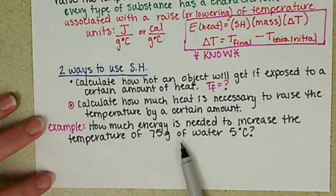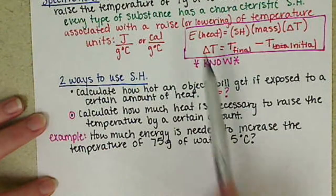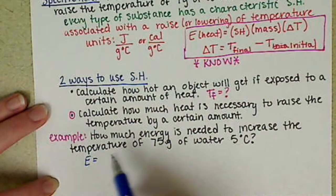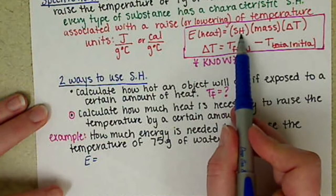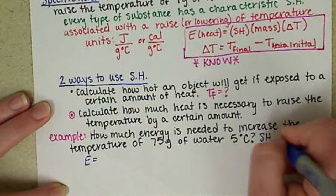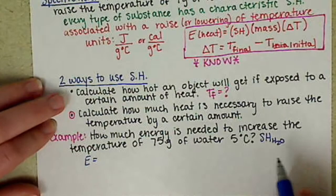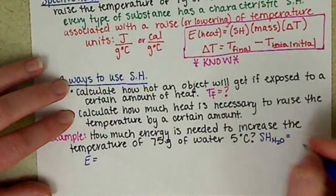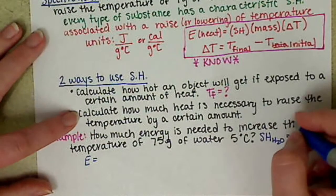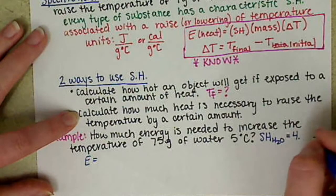So what we want to do is we want to follow this equation here. So our heat, our energy, is going to be equal to our specific heat, and we want the specific heat of water. Remember each individual substance has its own specific heat. The specific heat of water you can look this up in your book. Your book has a table of specific heats. This would be something that would be given to you in a problem.